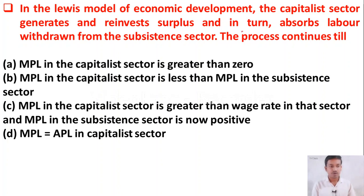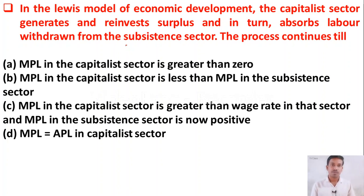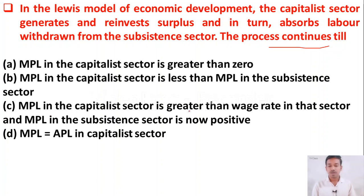The next question: in Lewis's model of economic development, the capitalist sector generates and reinvests surplus and in turn absorbs labor withdrawn from the subsistence sector. This process continues till — option A: marginal product of labor in the capitalist sector is greater than zero; option B: marginal productivity of labor in the capitalist sector is less than marginal product; option C: marginal productivity of labor in the capitalist sector is greater than the wage rate in that sector and marginal productivity of labor in the subsistence sector is now positive; option D: marginal product of labor equals average product in the capital sector.